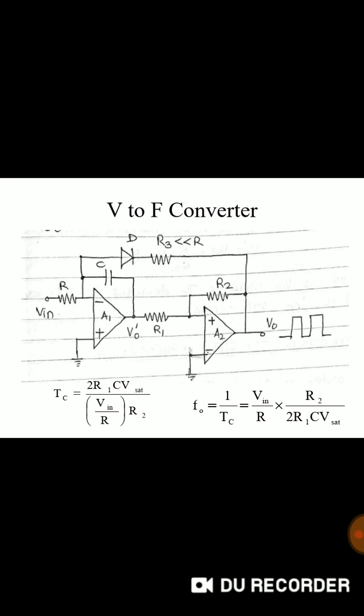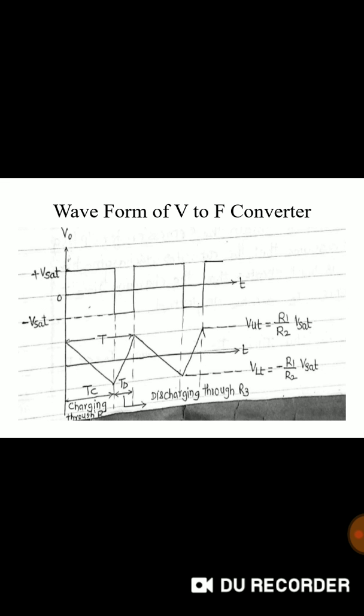As soon as the integrator output reaches to level of VLT of non-inverting Schmitt trigger, output will switch from plus Vsat to minus Vsat. The value of integrator output at which this change over takes place is given by value of VLT which is nothing but minus R1 by R2 times Vsat.